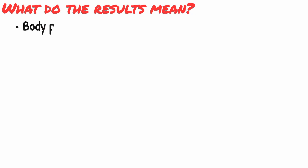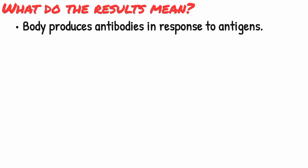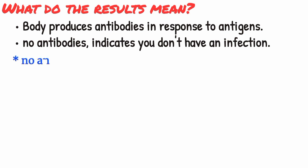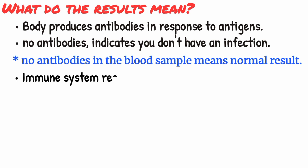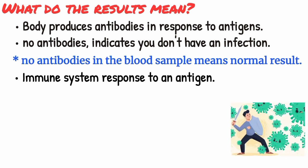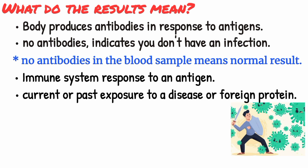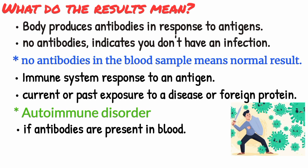What do the results mean? Normal test results: your body produces antibodies in response to antigens. If testing shows no antibodies, it indicates you don't have an infection — results showing no antibodies in the blood sample are normal. Abnormal test results: antibodies in the blood sample often mean you had an immune system response to an antigen from either current or past exposure to a disease or foreign protein. Testing may also help your doctor diagnose an autoimmune disorder by finding out if antibodies to normal or non-foreign proteins or antigens are present in the blood. The presence of certain types of antibodies can also mean that you're immune to one or more antigen.